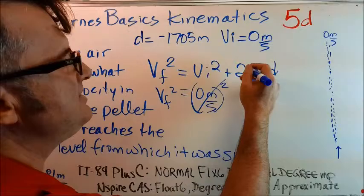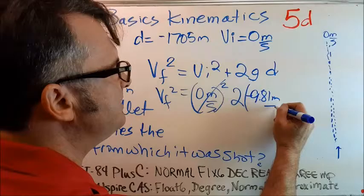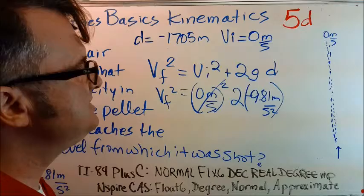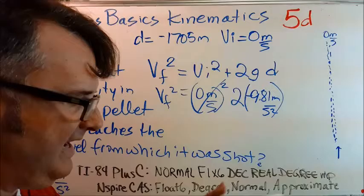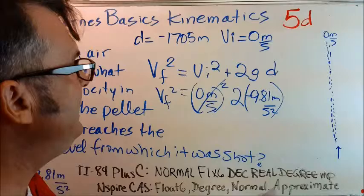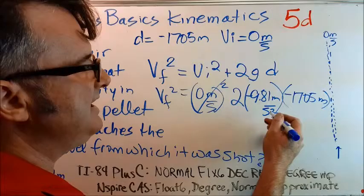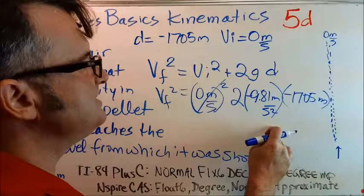In the end, we have this equation: VF squared equals two times gravity times the distance. If we take two, then we plug in the value of gravity, negative 9.81 meters per second squared, and then we plug in the downward distance, which we discovered in 5B. The upward distance was a positive value, but it fell back down the same distance, so we say it's negative because it's downward: negative 1705 meters. Notice that we're going to have meters times meters and seconds squared on the bottom. When we get the square root of it, we're going to have the square root of meters squared over second squared—that's going to work out beautifully.